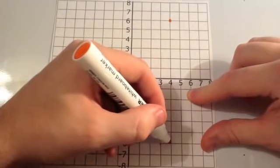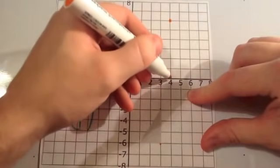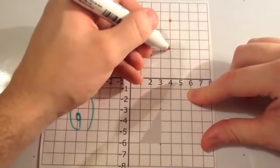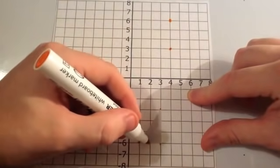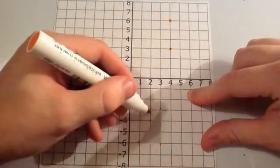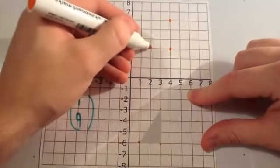This one, 1 square to the right, and 9 up. 1, 2, 3, 4, 5, 6, 7, 8, 9. And finally, the last corner, 1 square to the right, 9 up. 1, 2, 3, 4, 5, 6, 7, 8, 9.